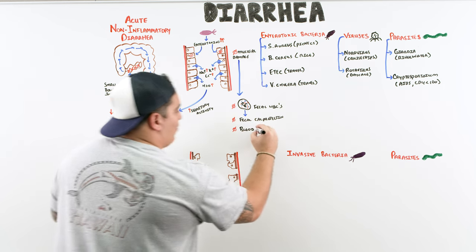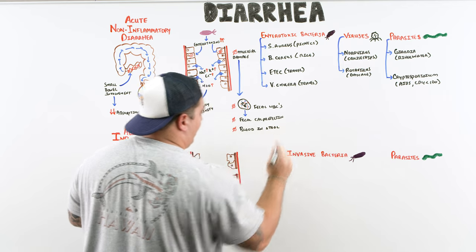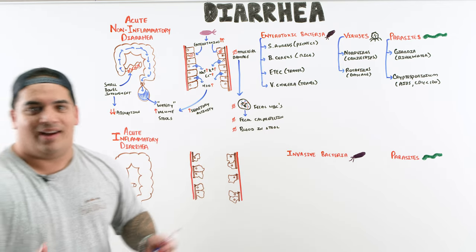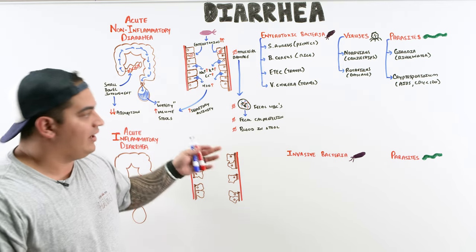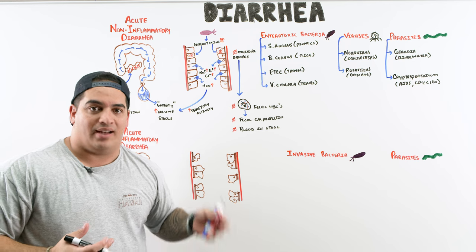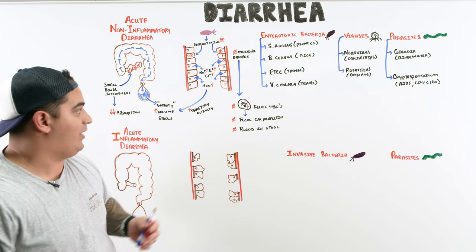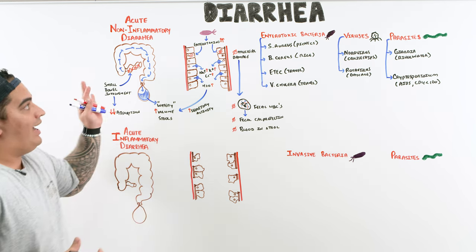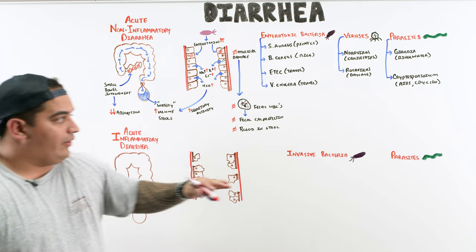Take that with a grain of salt — sometimes patients who wipe repeatedly develop irritated tissue or hemorrhoids that cause some blood, but that's from aggressive wiping, not from blood actually coming from within the stool. That covers the first part of diarrhea.